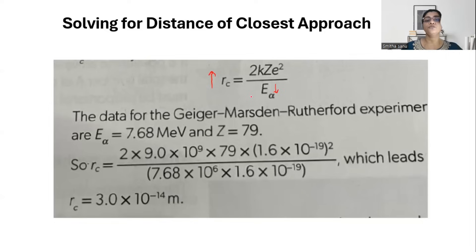Now if we substitute the values: K is the Coulomb's constant, Z is the number of protons, which is 79 for the gold nucleus, E is the charge of a proton, which is 1.6 times 10 to the power minus 19 and square of that. If you substitute the energy of alpha particles as a certain value, which is 7.68 mega electron volts, electron volts converted to joules, so you multiply it with 1.6 times 10 to the power minus 19.